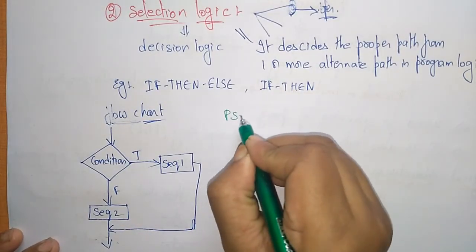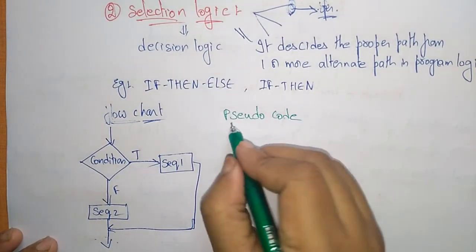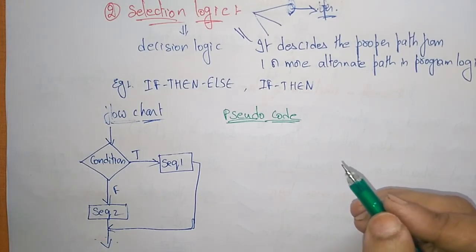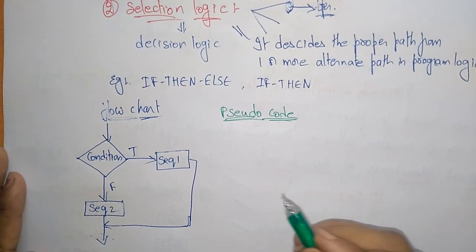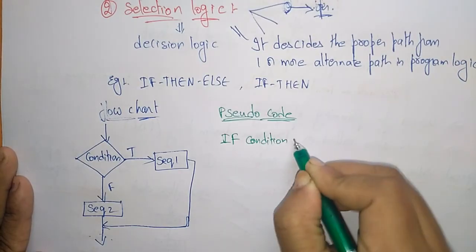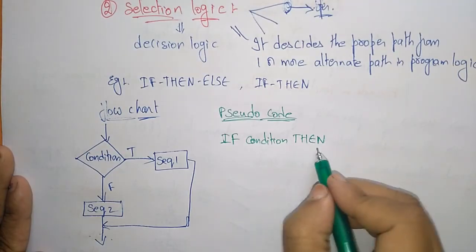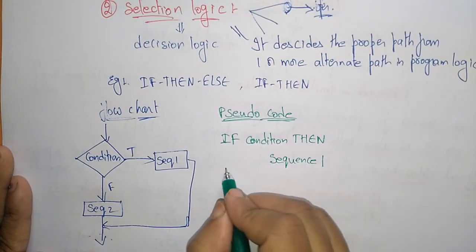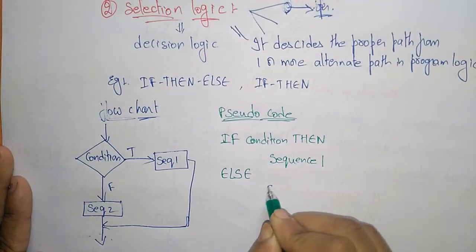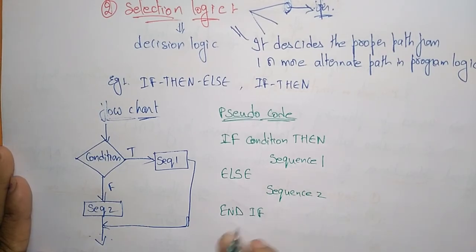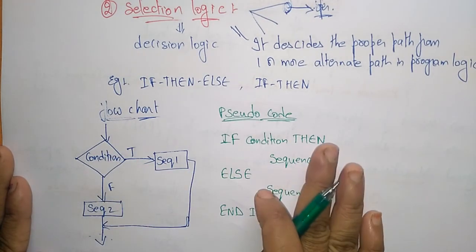Now how we will represent it in the form of pseudocode. The main thing in pseudocode is that keywords should be represented in capital letters — that is important. So: IF condition THEN sequence one ELSE sequence two END IF. This is how you represent the pseudocode. For this flowchart, this is the pseudocode. These are the different algorithms — this is selection logic, if-then-else.